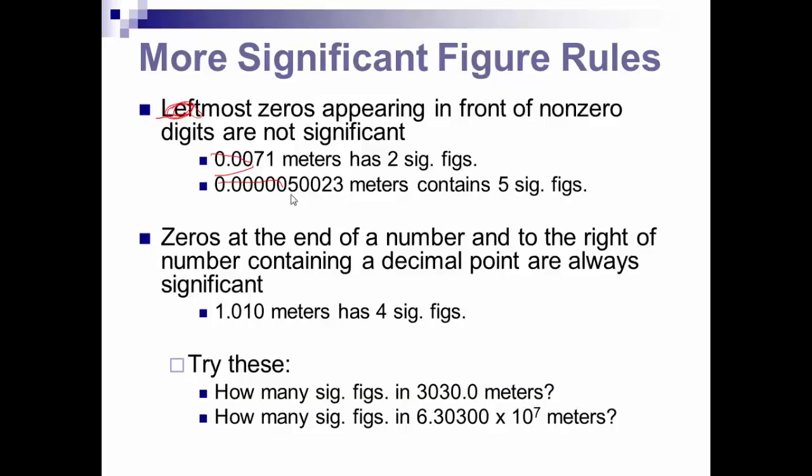But the leading zeros, the left zeros here, all of these are not significant. None of those are significant. So that 0.0071 only has two sig figs. 0.0000050023 has five sig figs because from the 5 to the 3 is significant, but nothing else is.